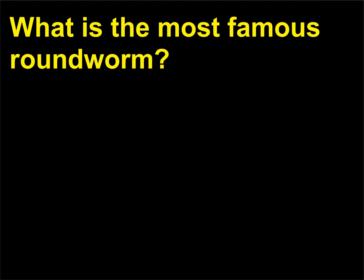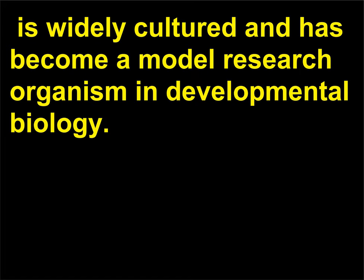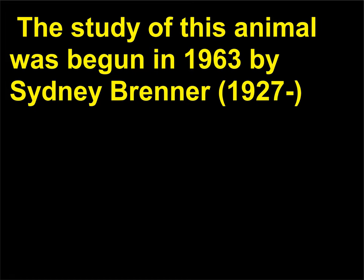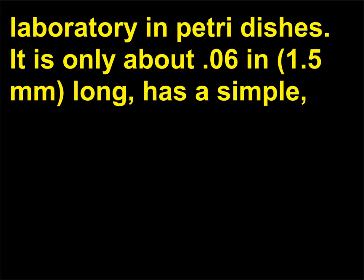What is the most famous roundworm? One soil nematode, Caenorhabditis elegans, is widely cultured and has become a model research organism in developmental biology. The study of this animal was begun in 1963 by Sidney Brenner, 1927, who received the Nobel Prize in Physiology or Medicine in 2002. The species normally lives in soil but is easily grown in the laboratory in petri dishes.